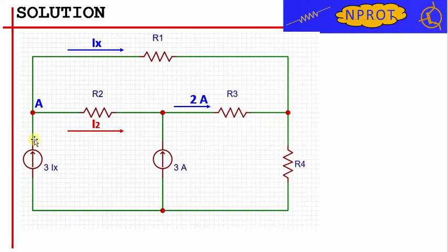We then have two currents exiting the node A, one equal to Ix which circulates in the branch of resistor R1, and a second current which we denote by I2 which circulates in the branch of resistor R2. In formulas, we have that 3 times Ix equals Ix plus I2.